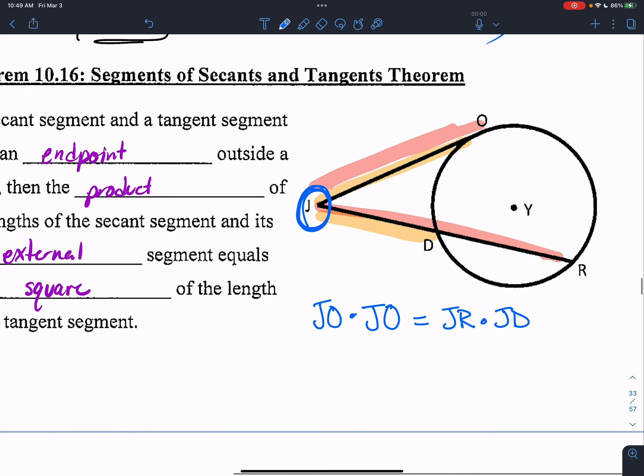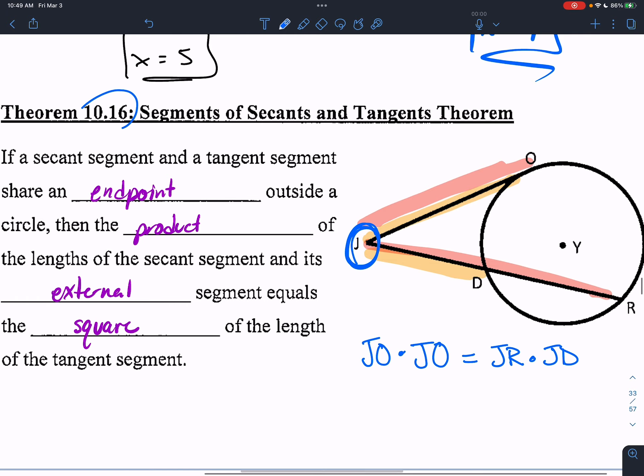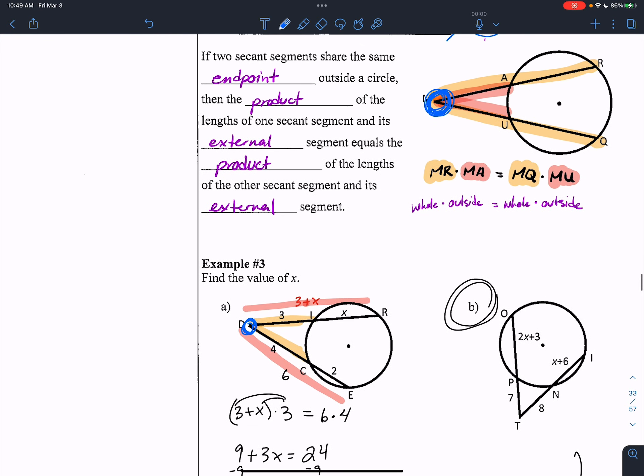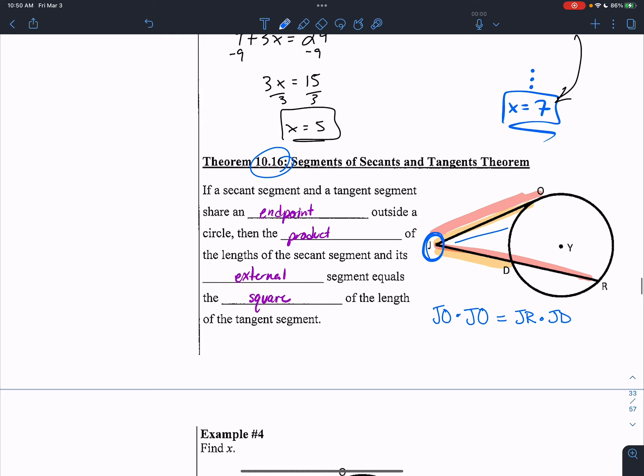All right guys, this theorem is the same thing. It's the whole thing times the outside part, the whole thing times the outside part. It just so happens that the outside part and the whole thing are the same here.